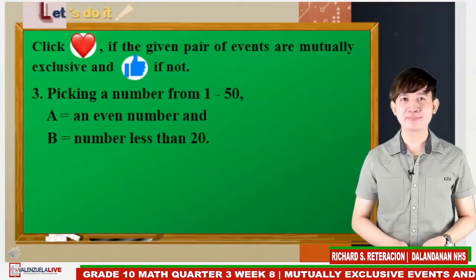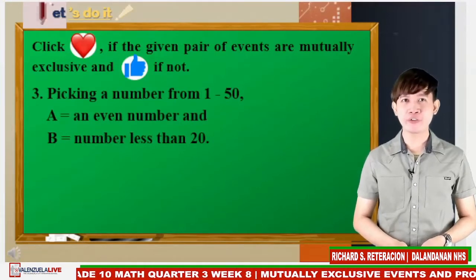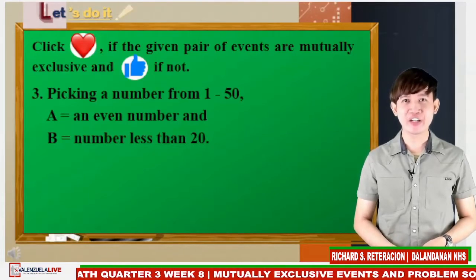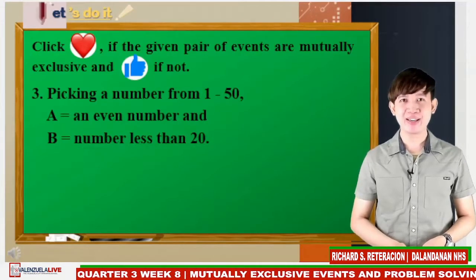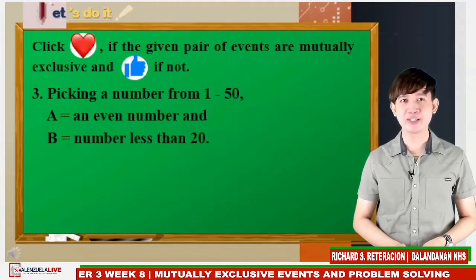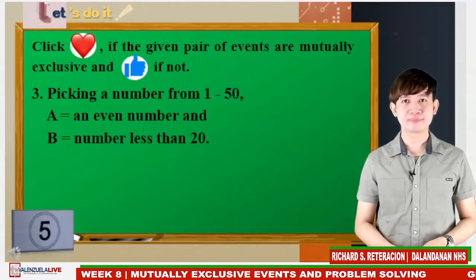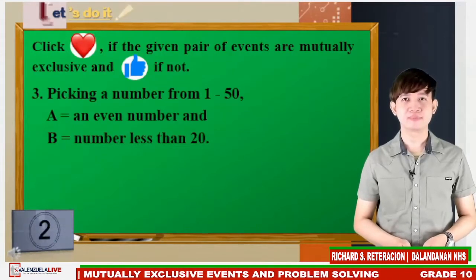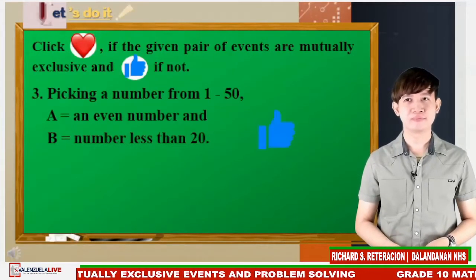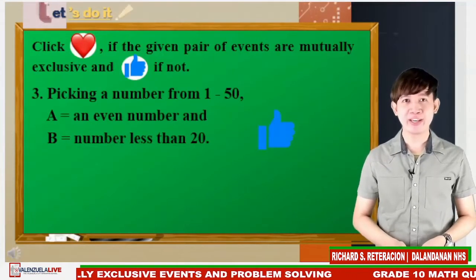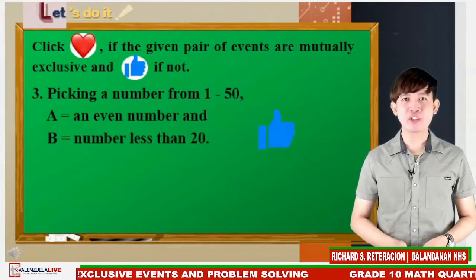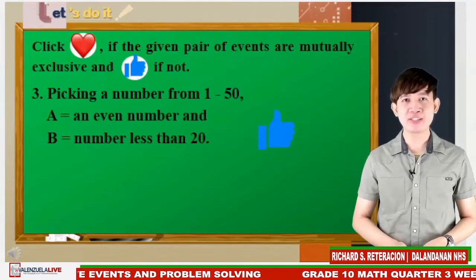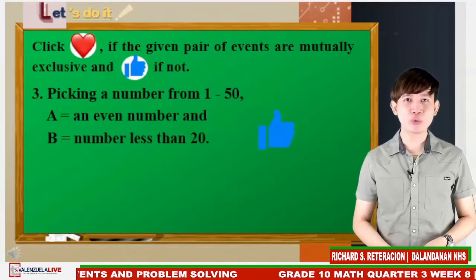Number 3: Picking a number from 1 to 50. A is a set that contains an even number and B is a set that contains a number less than 20. Like emoji — it is possible to pick a common element in set A and set B, which are divisible by 2 and less than 20 respectively.